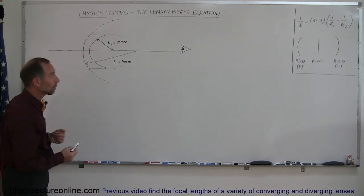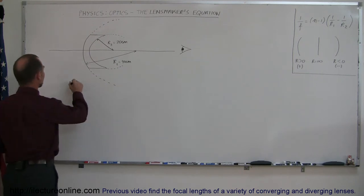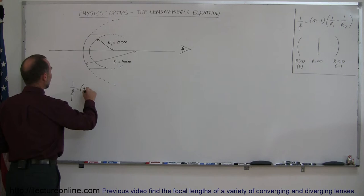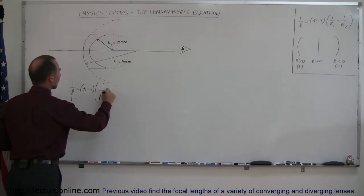Let's go ahead and use the lens maker's equation to find the focal length of this lens. 1 over f is equal to n minus 1 times 1 over r1 minus 1 over r2.